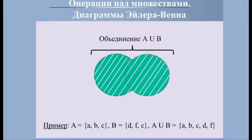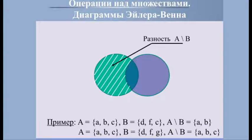В объединение двух множеств A и B входят элементы, принадлежащие A или B. Например, если A = {A, B, C} и B = {Д, Ф, С}, то A ∪ B = {А, В, С, Д, Ф}. В разность множеств A − B входят элементы, принадлежащие A и не принадлежащие B. Например, если A = {A, B, C} и B = {Д, Ф, С}, то A − B = {А, В}. Если A = {A, B, C} и B = {Д, Ф, Г}, то A − B = {А, В, С}.